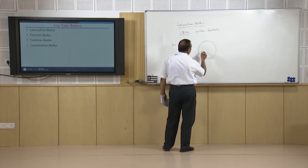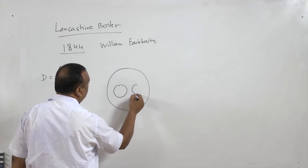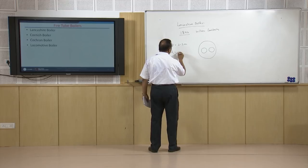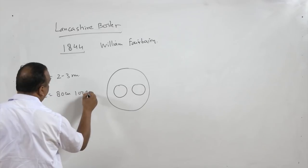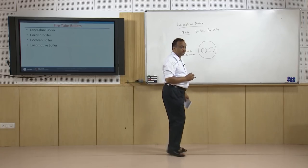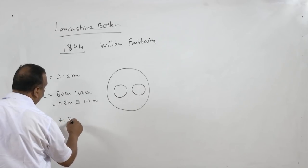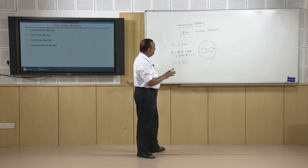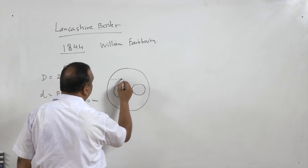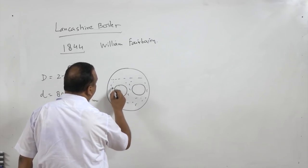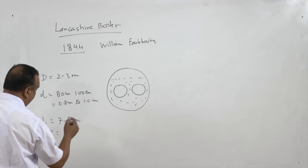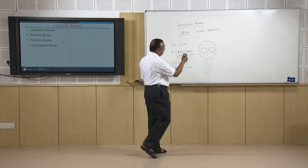Inside the shell there are 2 fire tubes of the same size, and the diameter of these fire tubes varies from 80 centimeters to 1.0 meter. The length of the cylinder is 7 to 8 meters. The flue gases after burning the fuel pass through these tubes. The shell is filled to a certain level with water and steam is stored at the top. The pressure of steam can go up to 20 bar in this boiler.